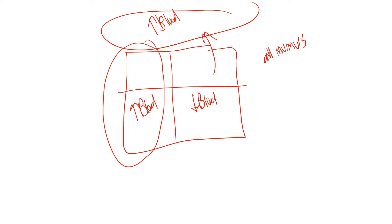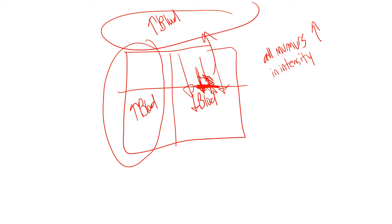Almost all murmurs increase in intensity with increased blood flowing across the valvular area. For example, in mitral stenosis, the more blood that goes across the stenosed mitral valve, the louder the murmur gets. So in mitral stenosis, murmur intensity increases when there's more blood on the left side. But in inspiration the left side has decreased blood, so the murmur of mitral stenosis decreases in intensity with inspiration.